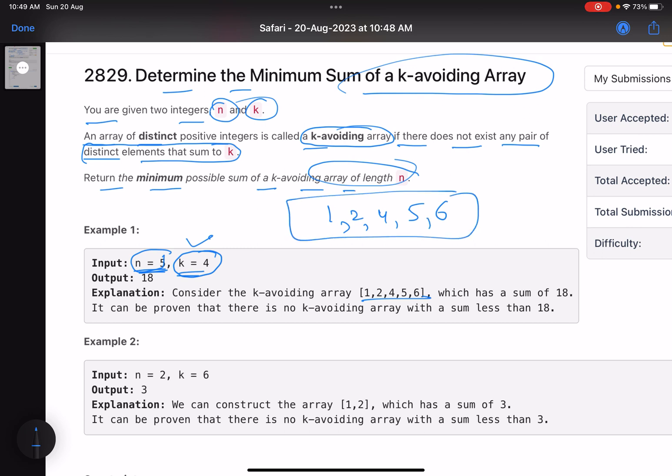Just see here: 1, 2, 4, 5, 6 is the answer in this case. These are the 5 elements and if you pick any pair, their sum is not equals to 4. Now why we have skipped 3 here? If you include 3, the sum of 1 and 3 becomes equals to 4, so that is why we have removed 3.